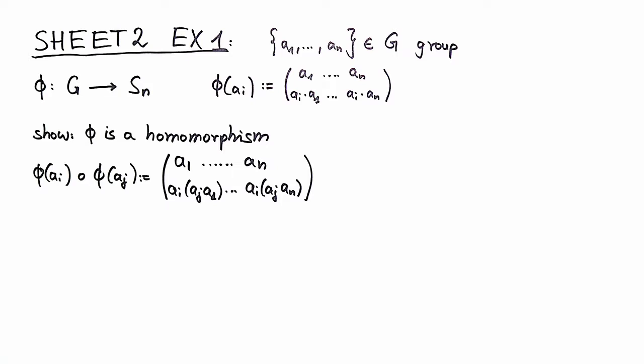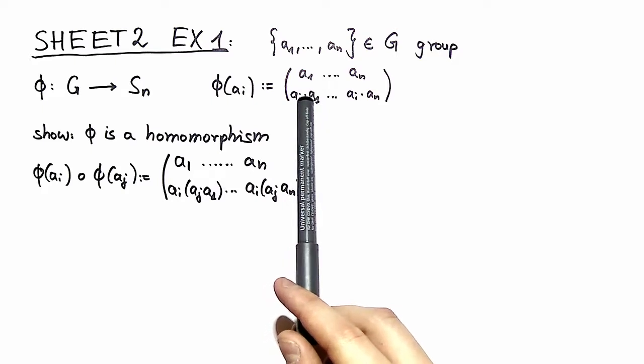Cayley theorem makes it possible to prove things for groups in general by only proving it for permutations. The core of this proof is to show a correspondence between a multiplication in our group of permutations to a multiplication in our group.